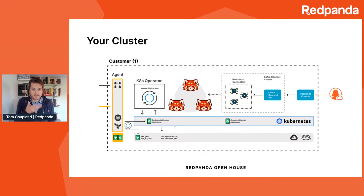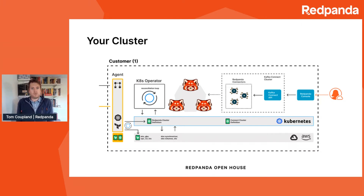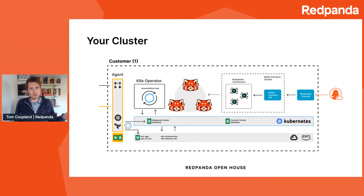This is zooming in now, and here you can see all the elements that we've got. This is a single instance of Red Panda, and this is what you would be getting. It's the same diagram whether we're managing it in our cloud account for you completely, or you've selected that you want it in your account in the BYOC product — both are identical. Here you can see all the elements that come together to bring this thing to life.